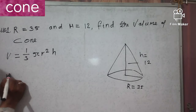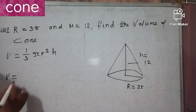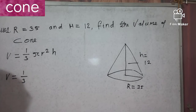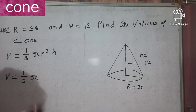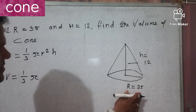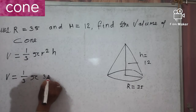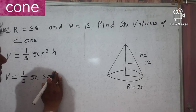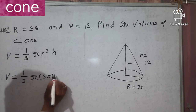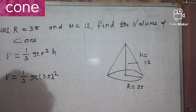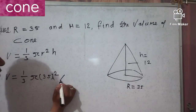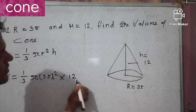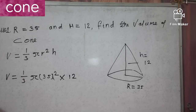So now, volume is equal to one-third times pi, and radius is given as 35, so we have 35 squared. What is the height? Height is given as 12, so we multiply by 12.